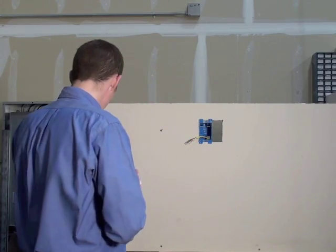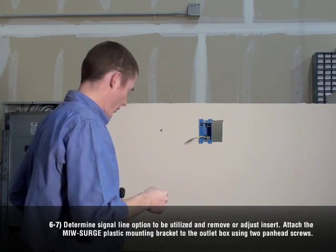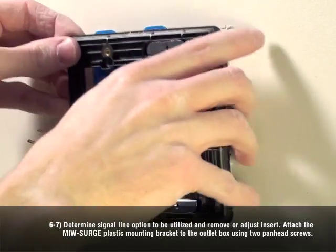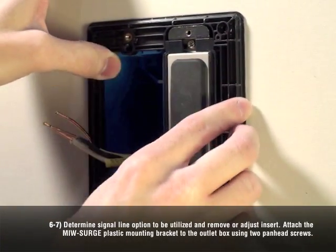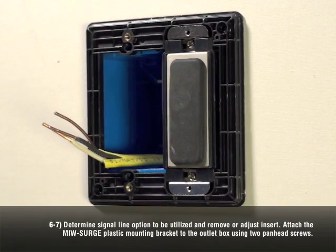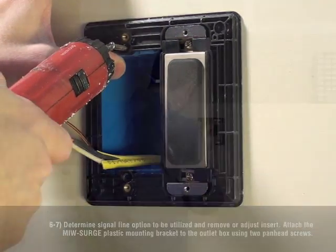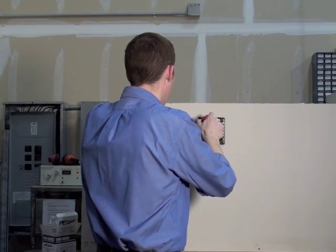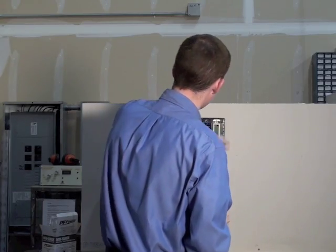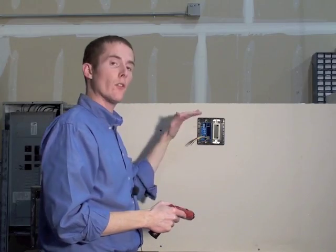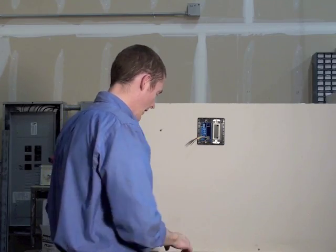That was steps three, four, and five. Now we're moving on to step six. Step six is to install the low voltage signal bay and mounting bracket to the electrical box. Nice and snug. It does help to use a level to make sure everything is evenly lined up.